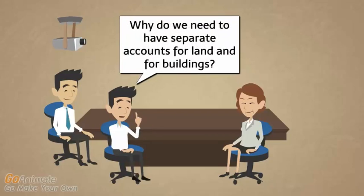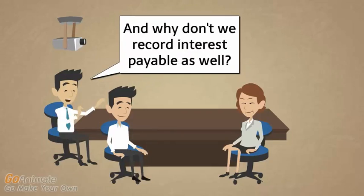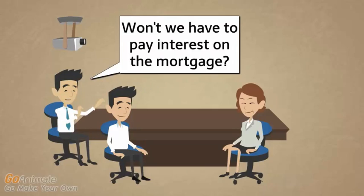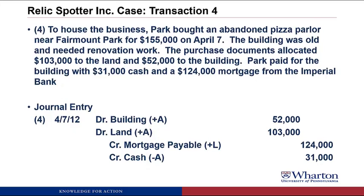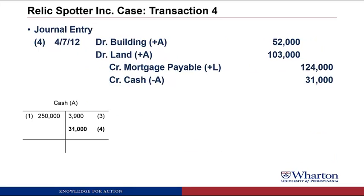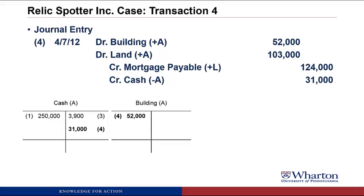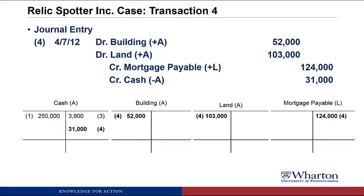We keep land and building in separate accounts because later we're going to do something called depreciation, and these two accounts will be treated differently. As for interest on the mortgage: we don't owe any interest when we take out the mortgage — we could pay it back immediately with no interest owed. Only as time passes and we owe interest without paying it will we need to record interest payable. We bring back our cash T-account with another credit, and create T-accounts for building, land, and mortgage payable.